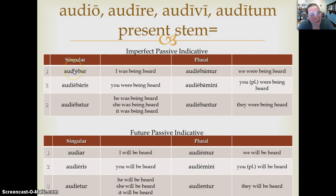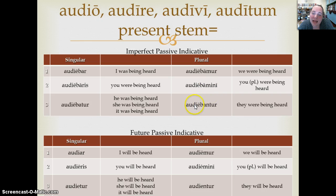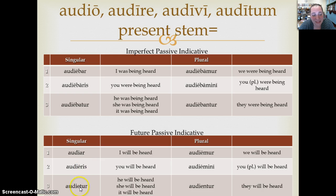Imperfect passive, exactly what you'd expect: audiebar, audiebaris, audiebatur, audiebamur, audiebamini, audiebantur. Future passive indicative: audiar, audieris, audietur, audiamur, audiemini, audientur.